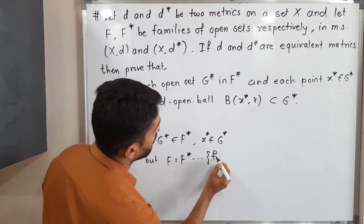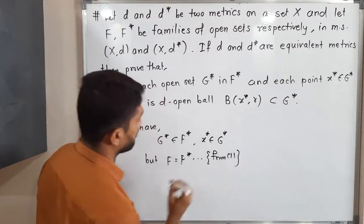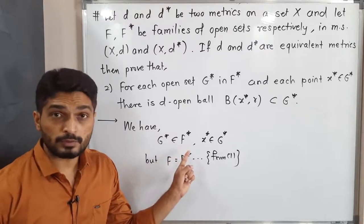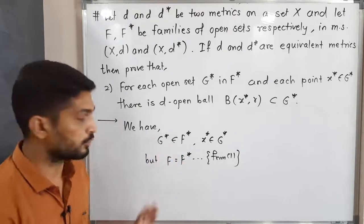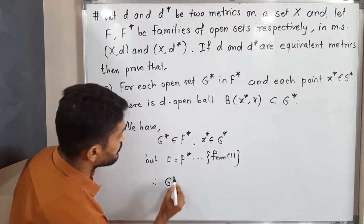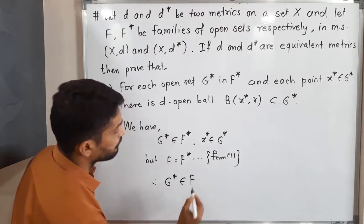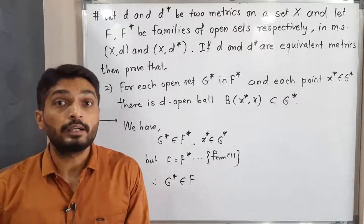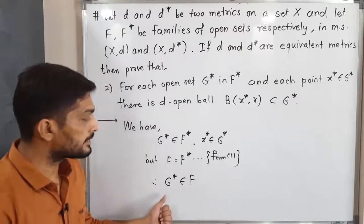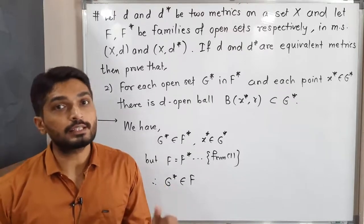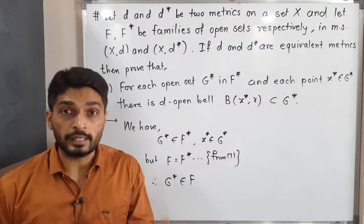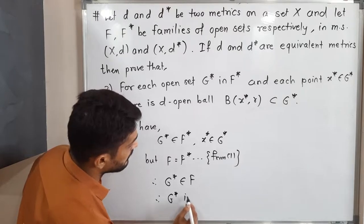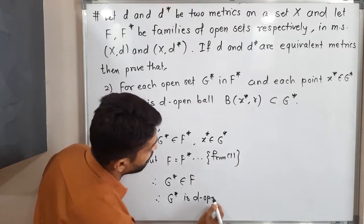F is equal to F star from equation one. F is equal to F star and G star belongs to F star, so therefore we can say G star belongs to F also. But you know that F is a family of D open sets, and G star belongs to F, so therefore we can say G star is also a D open set.